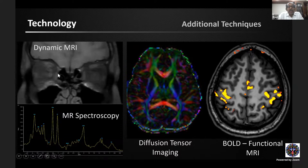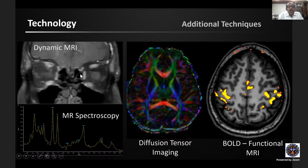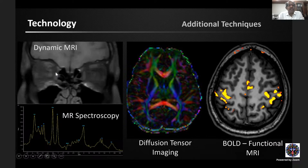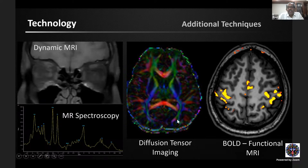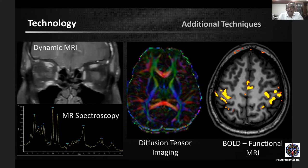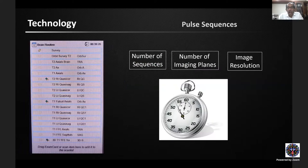Dynamic MRI acquires post-contrast images every 10 seconds, enabling detection of subtle abnormalities like superior ophthalmic vein thrombosis shown as a filling defect within the vein. MR spectroscopy reveals chemical composition of tissue, diffusion tensor imaging shows microarchitecture, and BOLD fMRI shows cortical activation in response to stimuli — all applicable to intracranial lesion characterization.